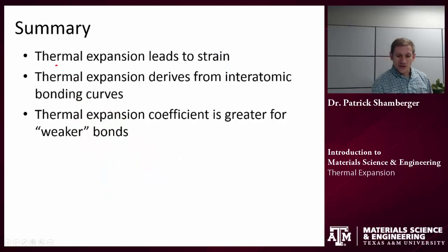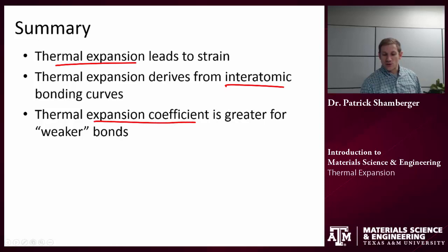In review, thermal expansion leads to a strain, a thermal strain. If a piece is confined, that could create a stress on the piece and that could ultimately lead the piece to fail or it could lead it to buckle like that image of the railroad ties we saw at the beginning. Thermal expansion ultimately is going to derive from this interatomic bonding. That's the atomic origin of the thermal expansion coefficient. Finally, the thermal expansion coefficient is going to be greater for weaker bonds. The weaker the bond, typically the larger the expansion I would expect to see resulting from a small change in temperature.